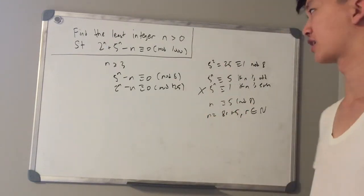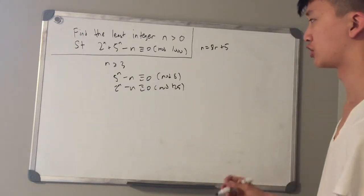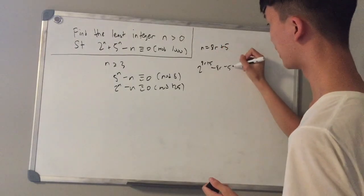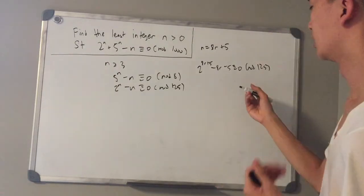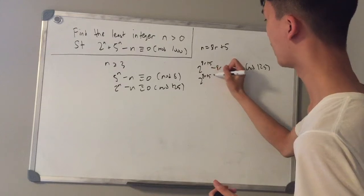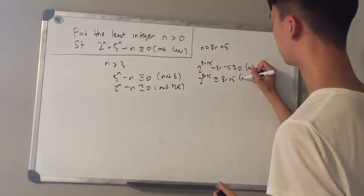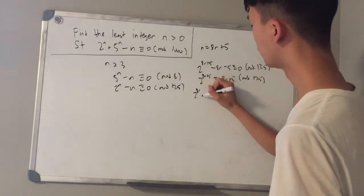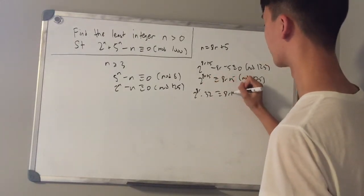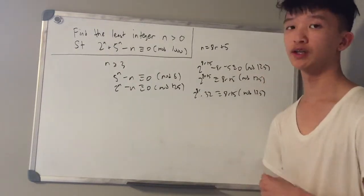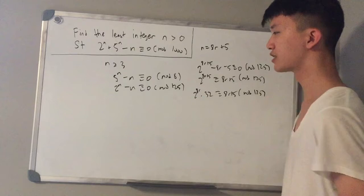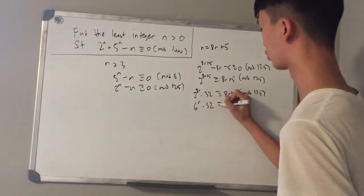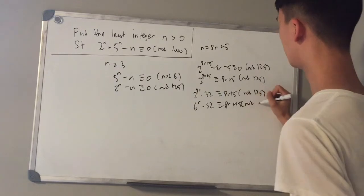Now we're going to look at the second equation. We substitute n = 8r + 5 into the expression, giving us 2 to the power of 8r plus 5 minus 8r minus 5 is equal to 0 mod 125. Then using power rules, we have 2 to the power of 8r times 32 is congruent to 8r plus 5 mod 125. Since 2 to the power of 8 is 256, and 256 is congruent to 6 mod 125, we get 6 to the power of r times 32 is congruent to 8r plus 5 mod 125.